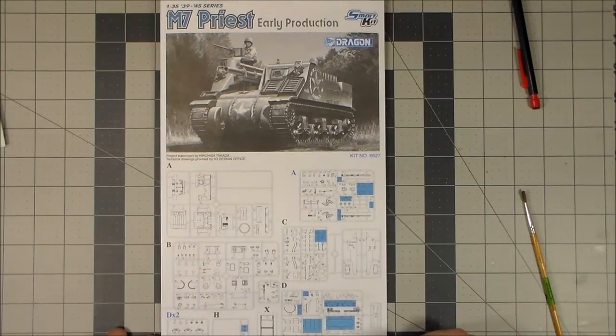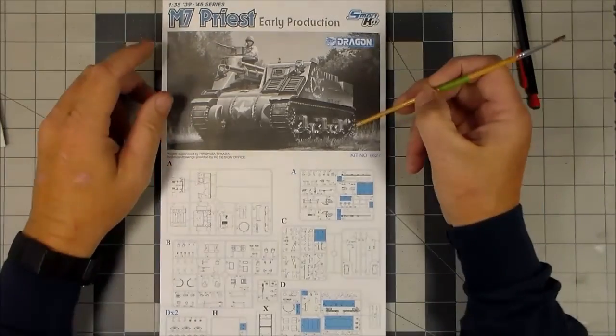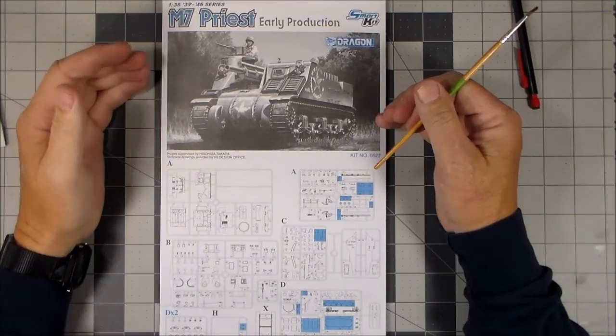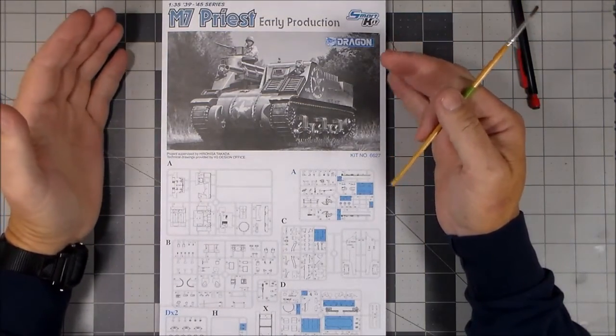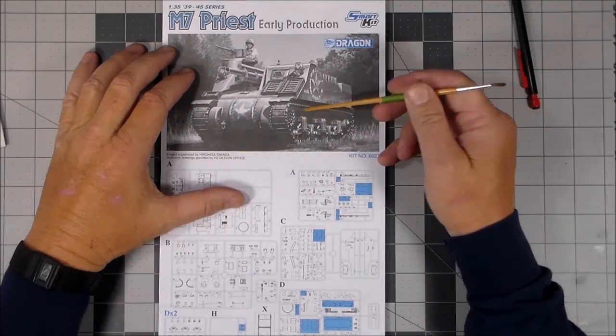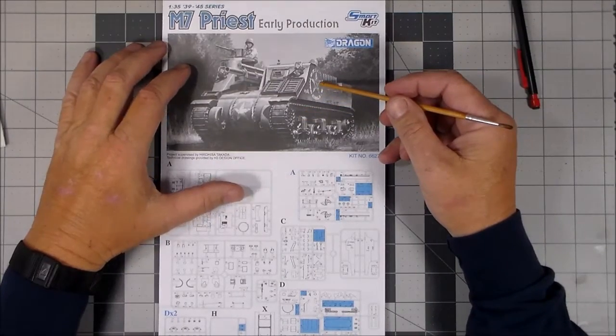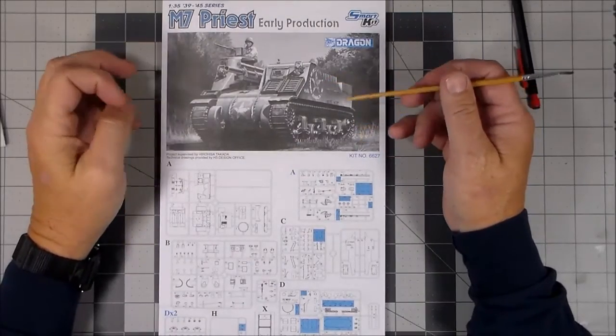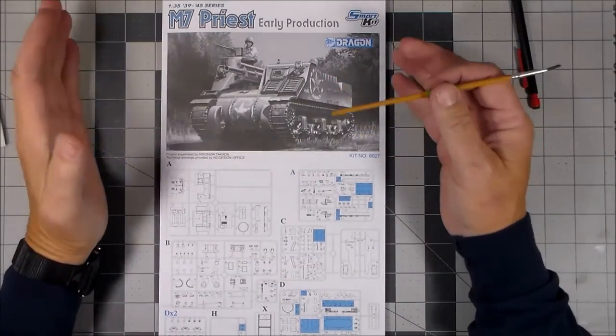Okay, welcome back to Plastic Models by a Regular Dude. This is a wrap-up with an explanation of the way I assembled the M7 Priest Early Production. I've already posted the completed kit and will provide a link so you can check that out if you like.